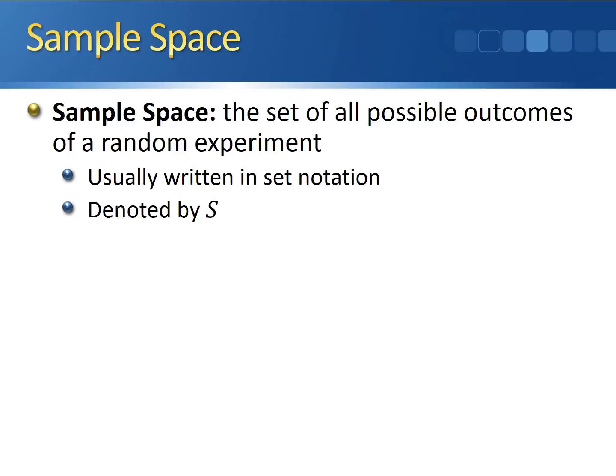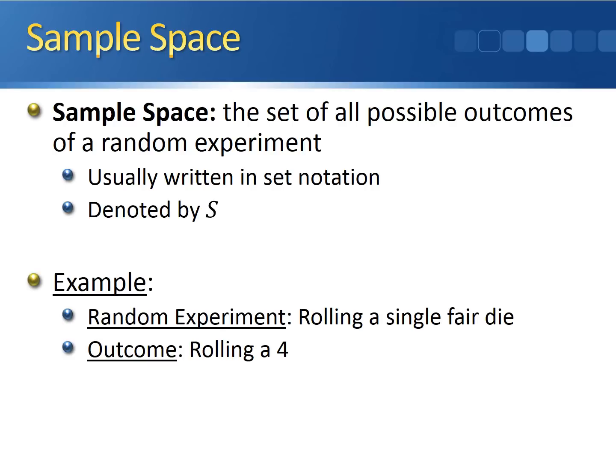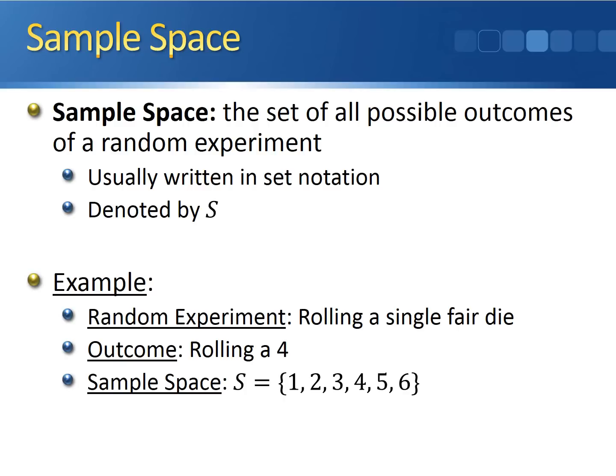Taking a look at the example we've been working with — rolling a single fair die — our outcome is rolling the number four. The sample space consists of the integers one through six, since those are the only possible numbers you can roll on a single fair die: one, two, three, four, five, and six. We put them inside a set of braces, call it our sample space, and denote it by the letter S.